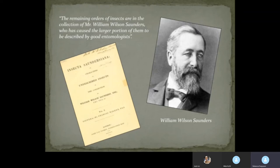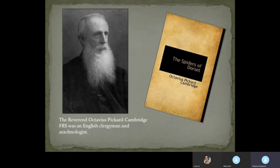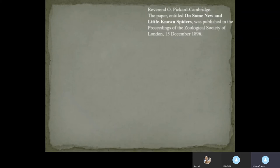Saunders' main interest being entomology, he had no real interest in spiders. But later in his life he suffered financial hardship and sold his entire collection to the Reverend Octavius Pickard-Cambridge, an English clergyman and above all an arachnologist, who gave us a wonderful book called The Spiders of Dorset. If Saunders had sold his collection to Pickard-Cambridge, there must have been spiders in it, because Pickard-Cambridge was an arachnologist first and foremost. So we searched through his papers, and he had written a paper entitled 'On Some New and Little-Known Spiders.'